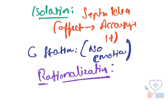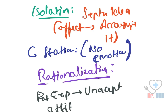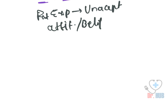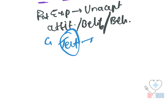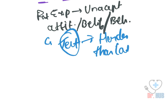Next is rationalization. In rationalization, rational explanations are used to justify unacceptable attitudes, beliefs, and behaviors. An example is not getting good marks on a test and telling yourself it was because the test was harder than the year before. This is nothing but rationalization.